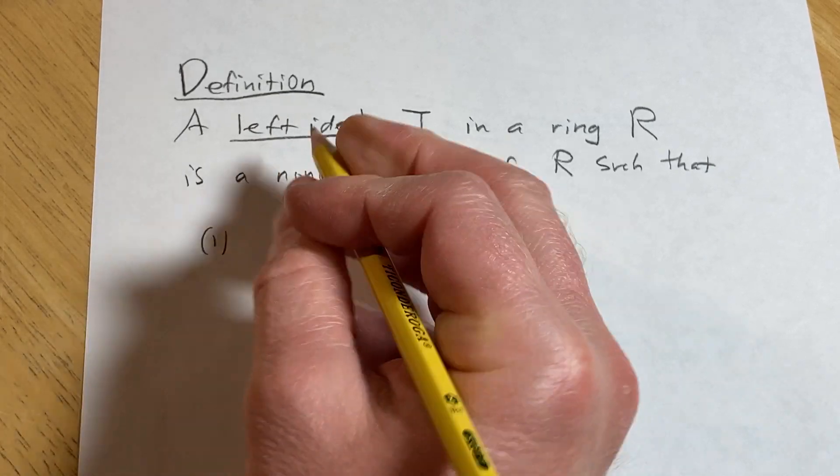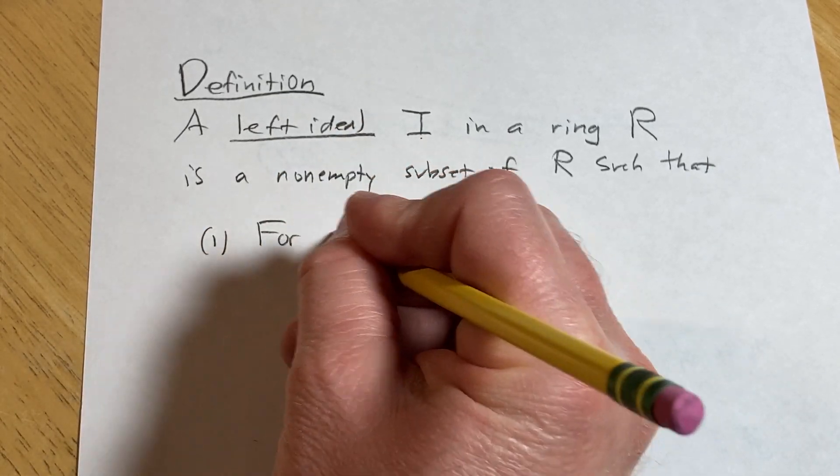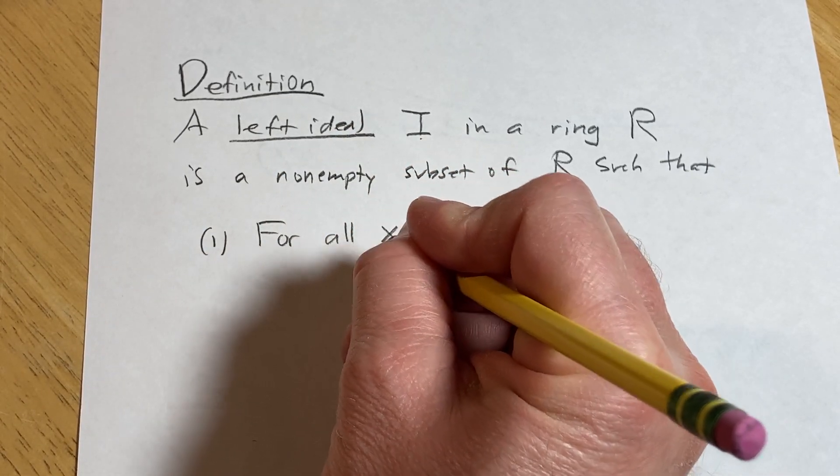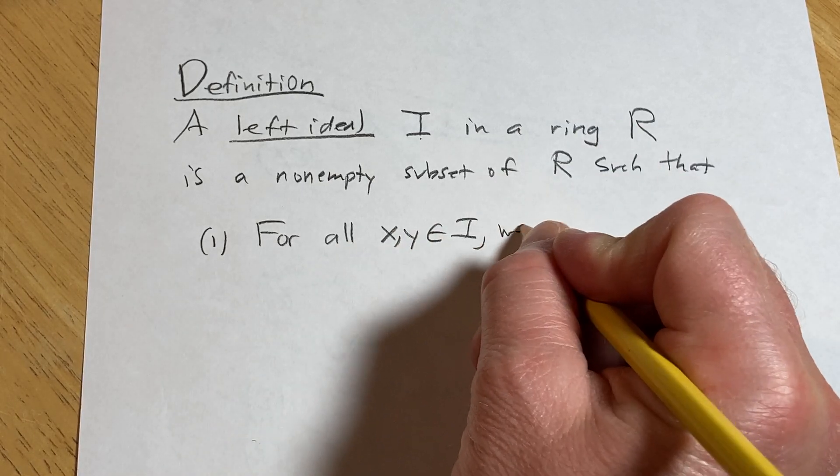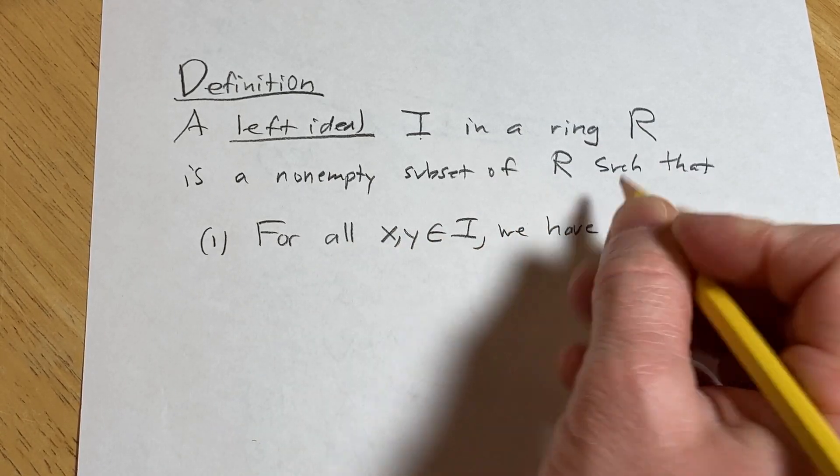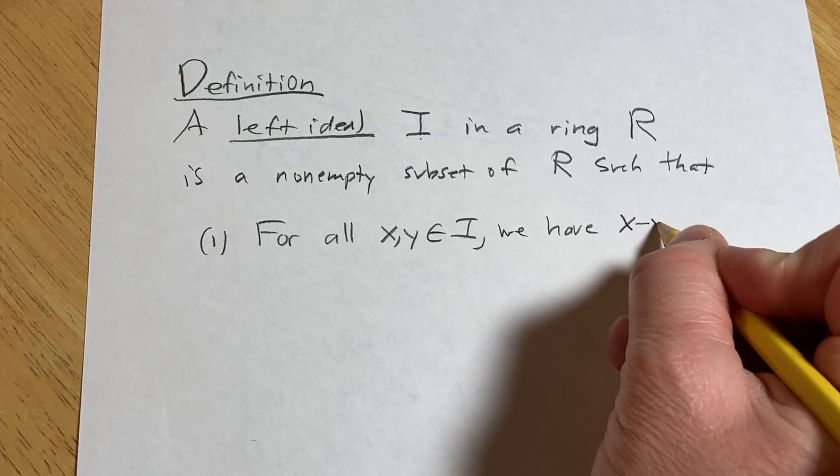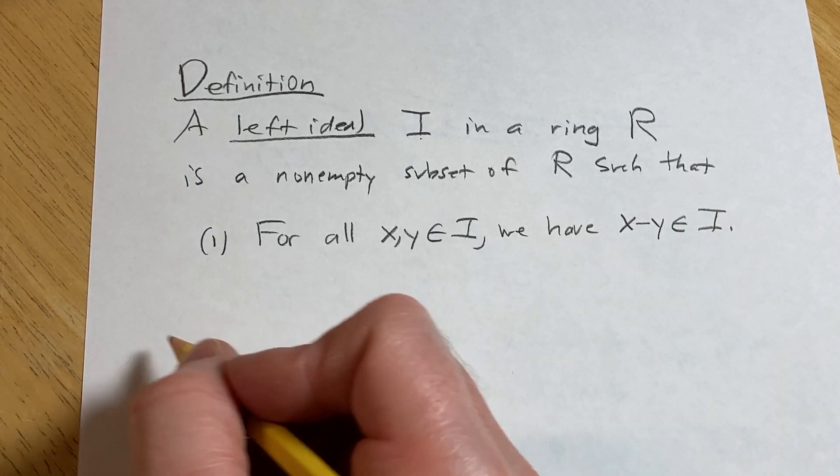So the first condition is that for all x, y in I, we have x minus y also in I.